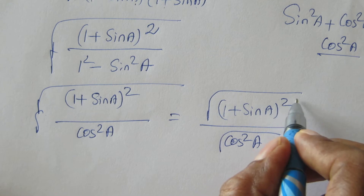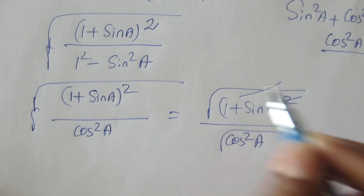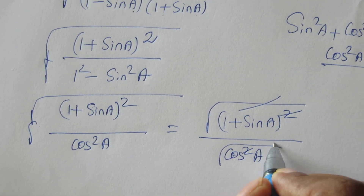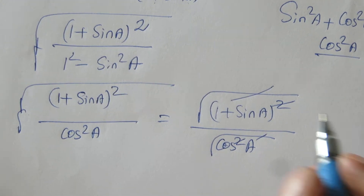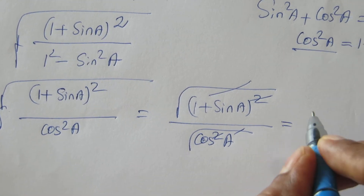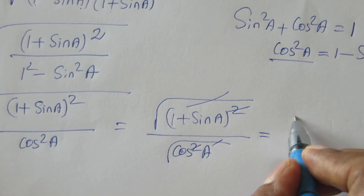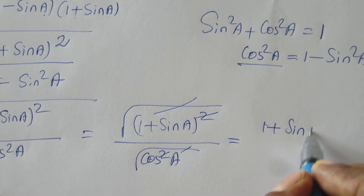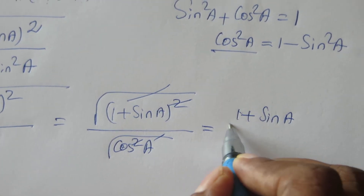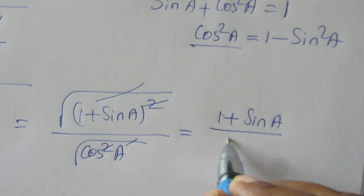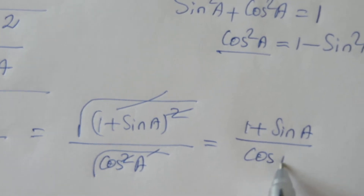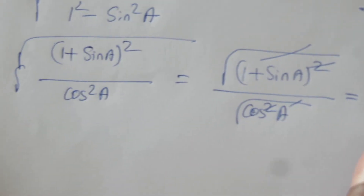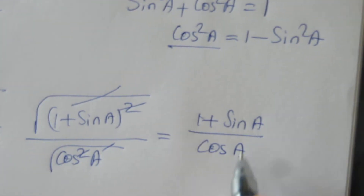The squares cancel — square cancels with square root in both numerator and denominator. The remaining term is 1 plus sin A divided by cos A. Now we split these two terms.